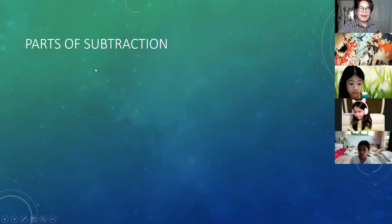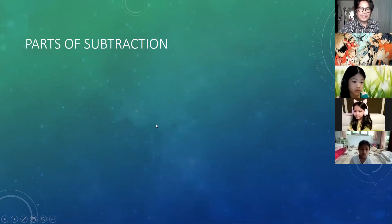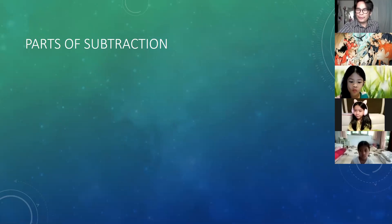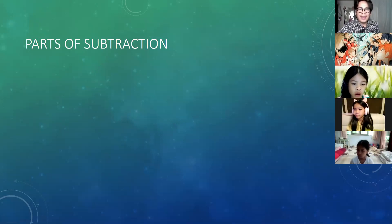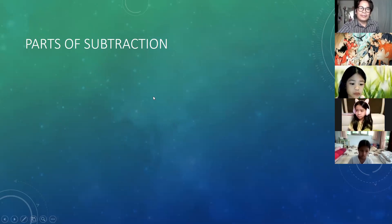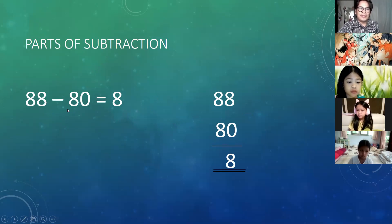Before we go to page 22, I would like to ask you first: what are the parts of subtraction? We have learned the parts of addition — addend plus addend equals sum or total. So for example, two plus three equals five; two and three are addends and five is called the sum or total. So how about, for example, 88 minus 80 equals 8 — what do you call 88, what do you call 80, and what do you call 8?